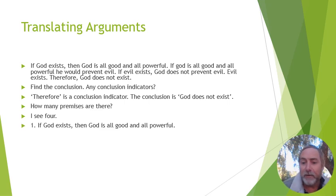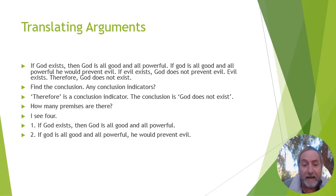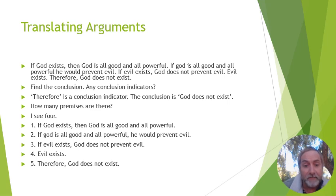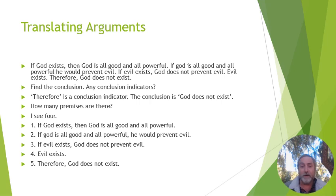Let's number them. Premise one: if God exists, then God is all good and all powerful. Premise two: if God is all good and all powerful, he would prevent evil. Premise three: if evil exists, God does not prevent evil. Premise four: evil does exist. And the conclusion is God does not exist. So we've found our conclusion, found our premises, and numbered them. That's step one. Now we need to translate these into our logical language.